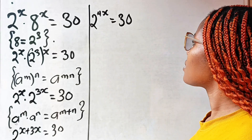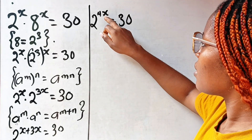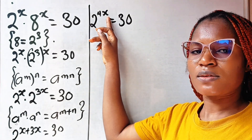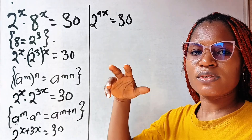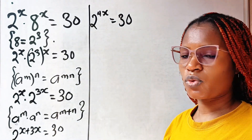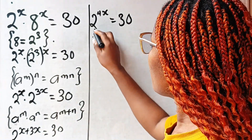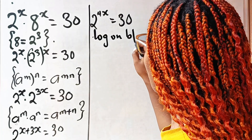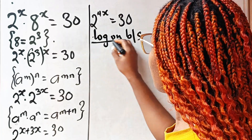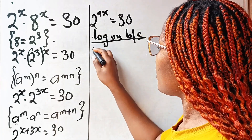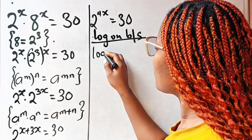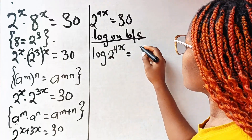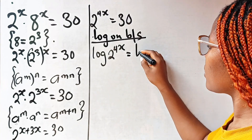Since x is the power, we cannot solve this without introducing log to both sides of the equation. So introducing log on both sides, we are going to have log of 2 to the power of 4x equals log 30.